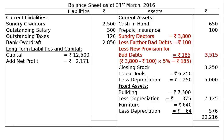Long-term liabilities and capital: capital rupees 12,500 plus net profit rupees 2,171. Then less stationery drawings — as shown in the profit and loss account, since the proprietor drew stationery for personal use, the stationery drawings account is debited and is to be deducted from net profit in the balance sheet. Total capital section is rupees 14,446.